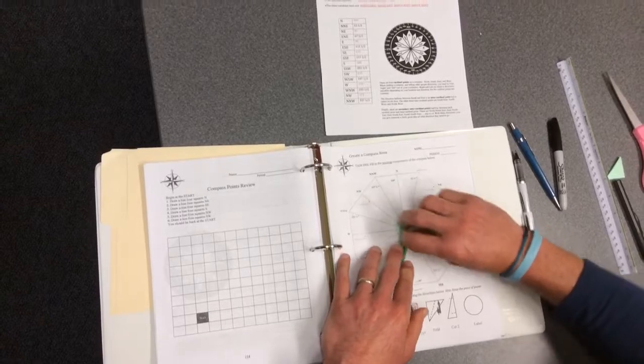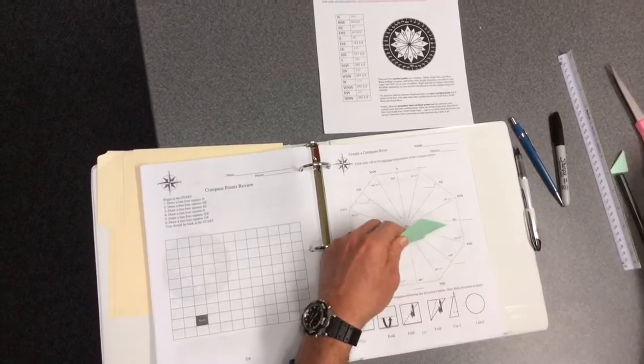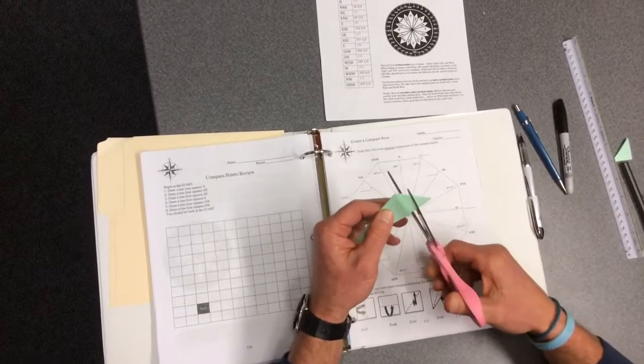Now turn your compass rose over. Using your scissors, make a nice straight cut along the edge.